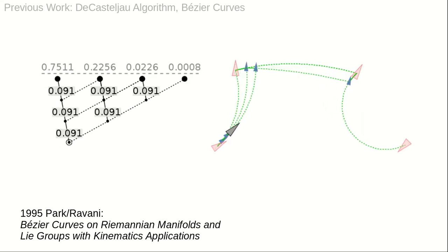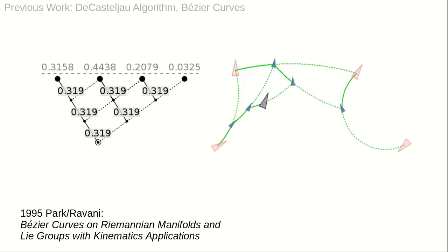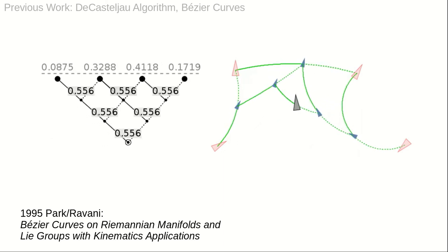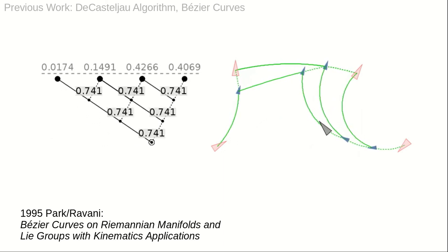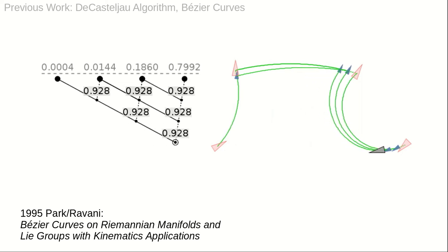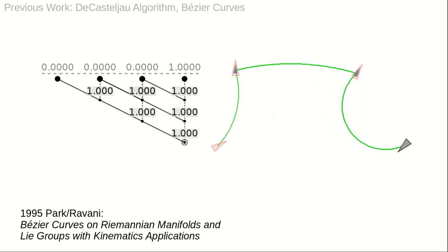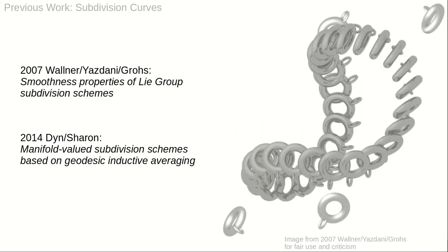Geodesic averages were first suggested to generalize Bezier curves to Riemannian manifolds and Lie groups by Park and Ravani. Geodesic averages were also used to define subdivision curves in these spaces. The illustration shows a curve generated in SE3 by one of the early articles on this topic.